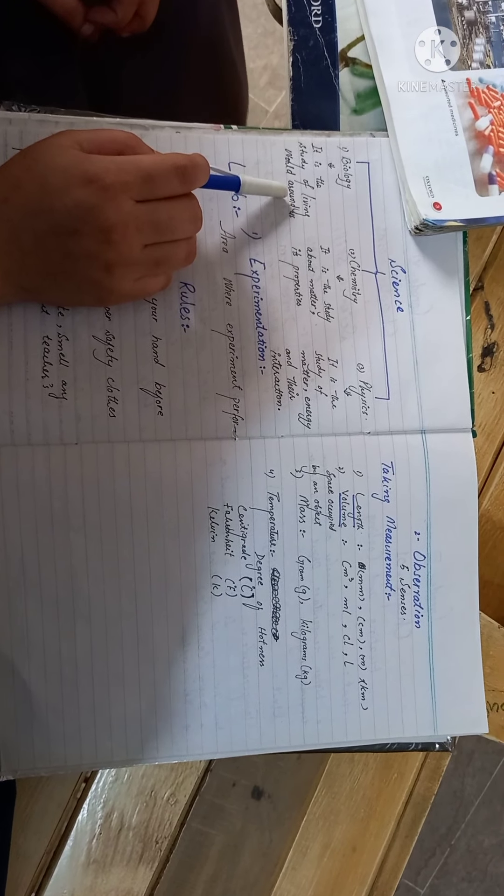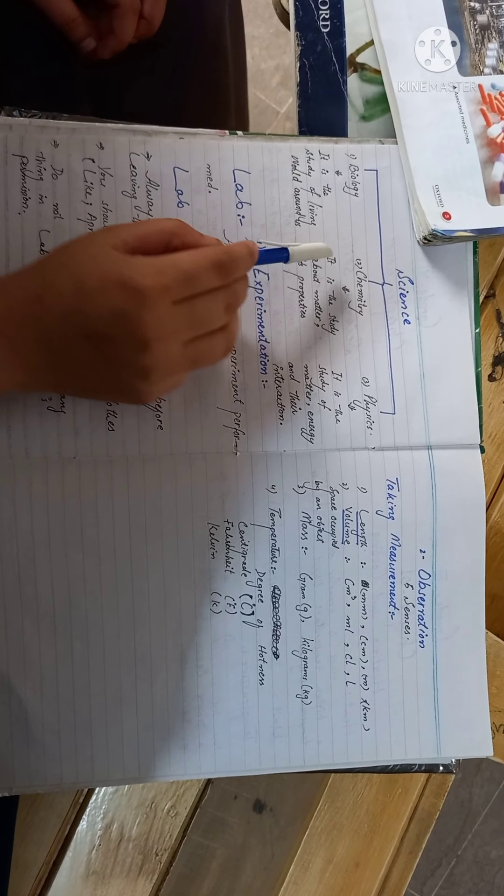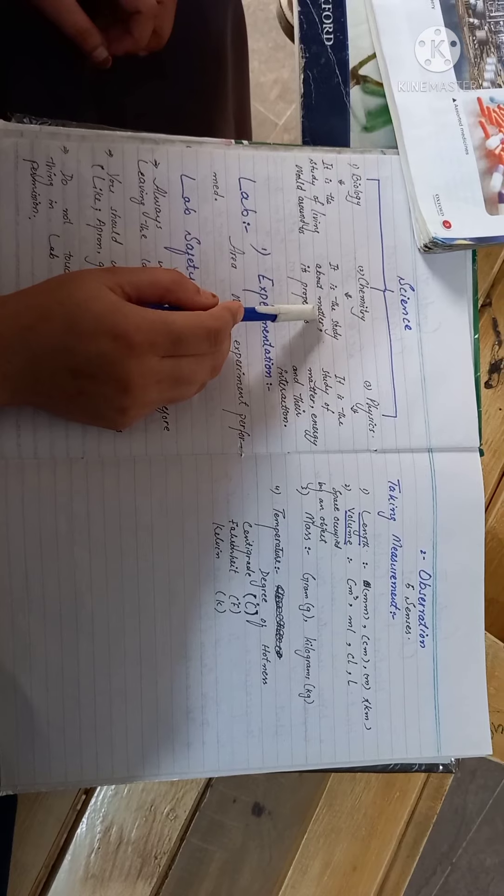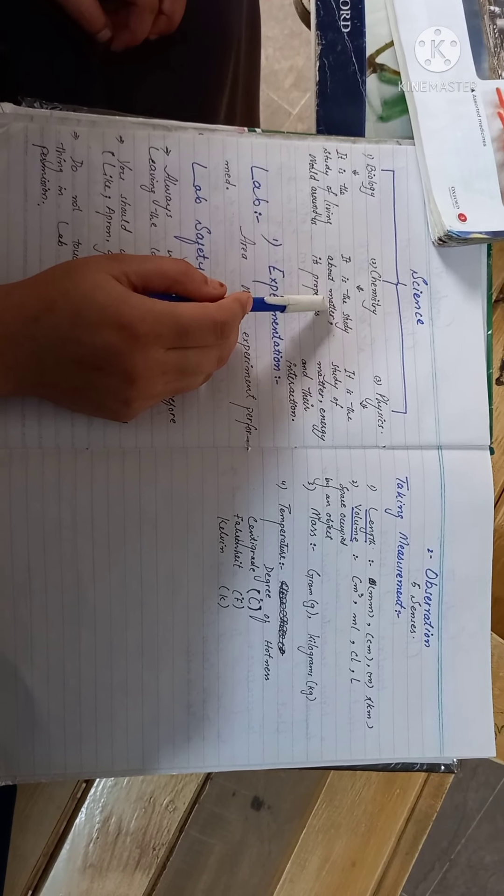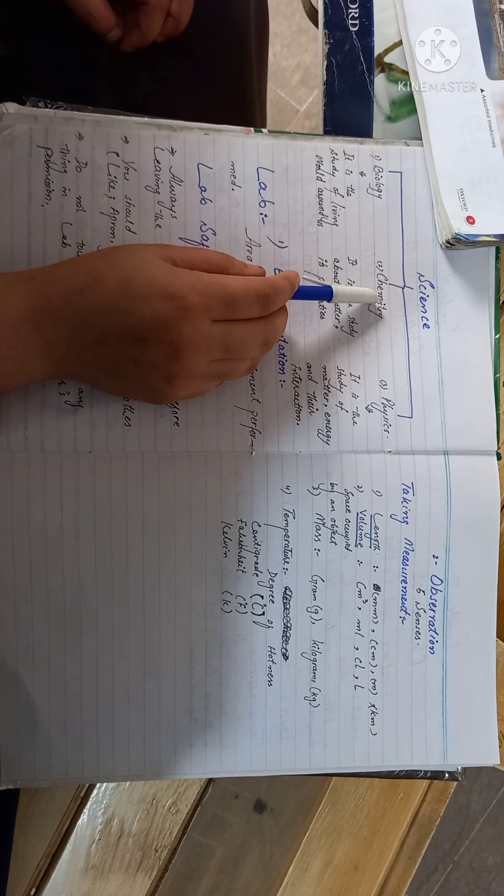Chemistry is the branch of science that deals with matter and its properties. Basically, matter is especially called chemicals. Chemicals' properties, chemicals' structure is called chemistry.